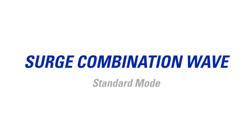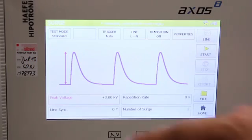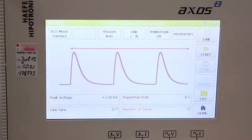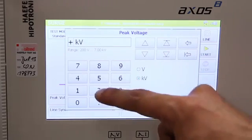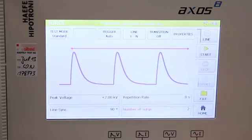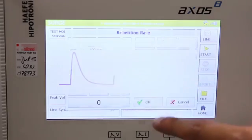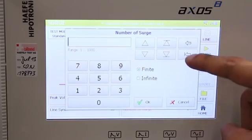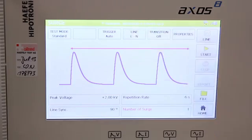Let's begin with a 1 kV surge combination wave test. All parameters are entered to the touchscreen, such as peak voltage, line synchronization angle, repetition rate, as well as number of surges. Let's do a 2 kV test, the line sync angle of 90 degrees, repetition rate of 6 seconds, and one number of surges. Additionally, we'll select all available coupling paths.